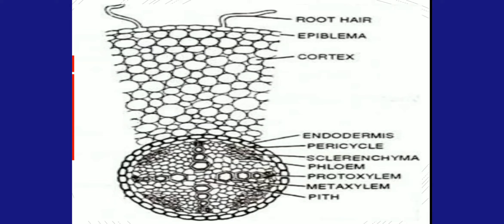After cortex, endodermis is present with thickenings called Casparian bands. After that, pericycle is visible, and inside the pericycle, xylem and phloem can be seen with metaxylem towards the center and protoxylem towards the peripheral region.